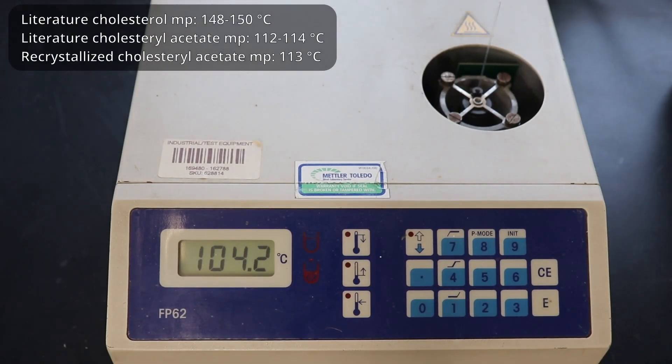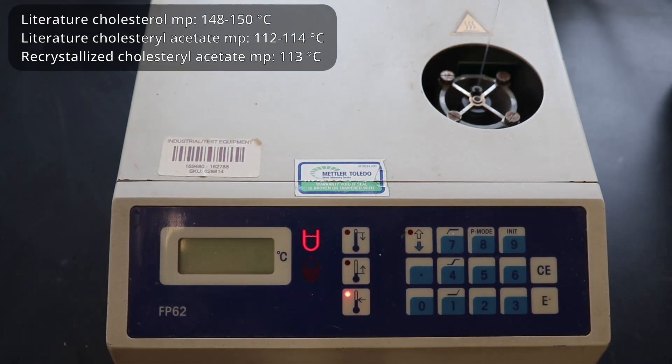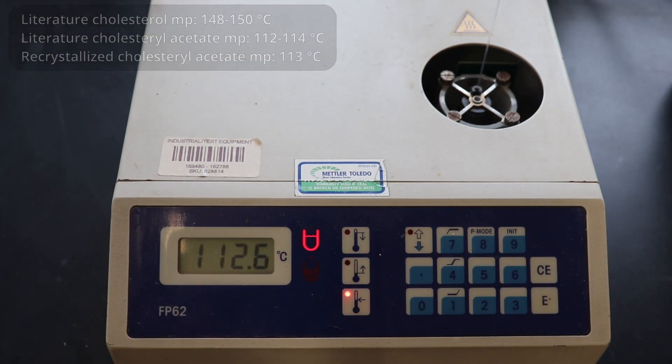So the first test I did to characterize my product was the melting point. My product melted at 112.6 degrees celsius, which perfectly fits in the literature melting point range for cholesterol acetate of 112 to 114 degrees celsius.